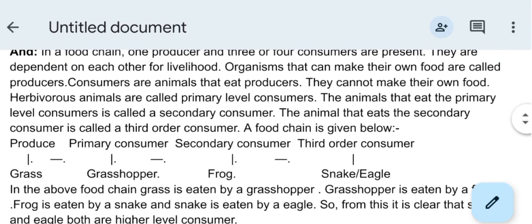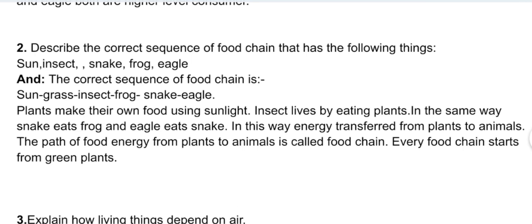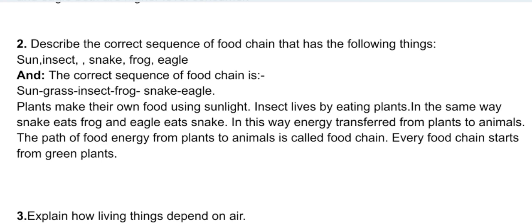Descriptive question two: describe the correct sequence of food chain that has the following things — sun, insects, snake, frog, eagle. The correct sequence of food chain is: grass → insect → frog → snake → eagle. Plants make their own food by using chlorophyll. Insects live by eating plants. In the same way, snake eats frog and eagle eats snake. In this way energy is transferred from plants to animals. The path of food energy from plants to animals is called a food chain.